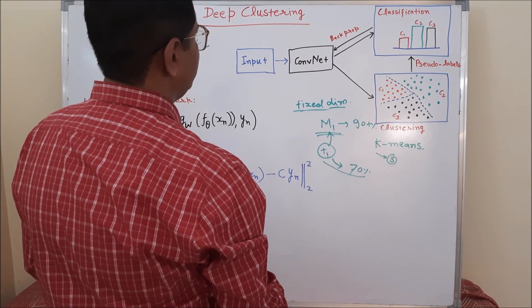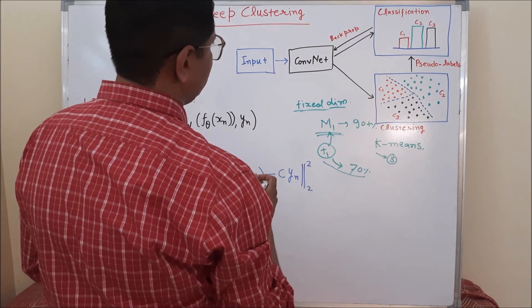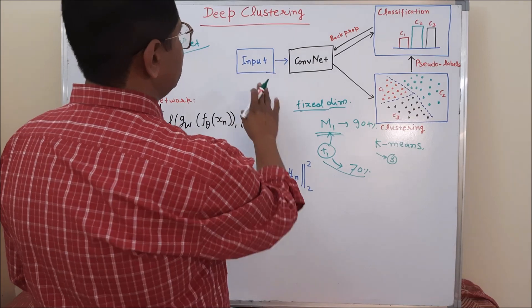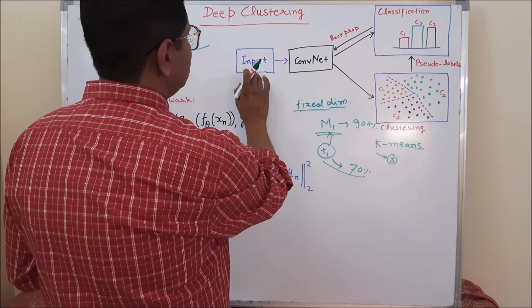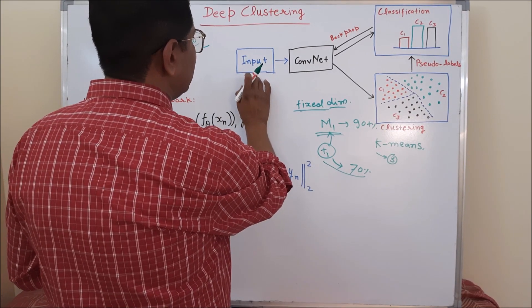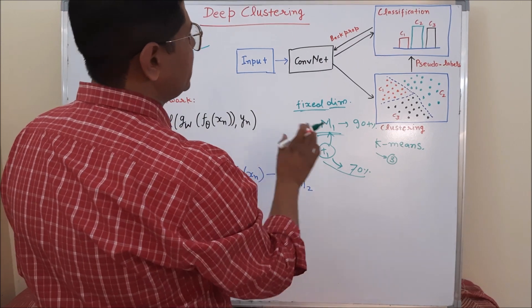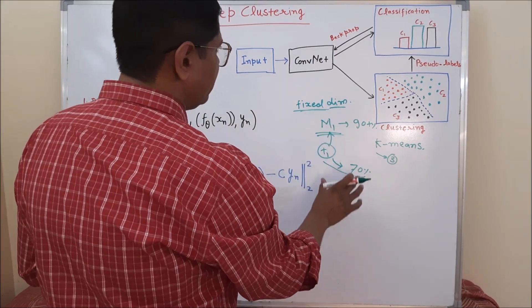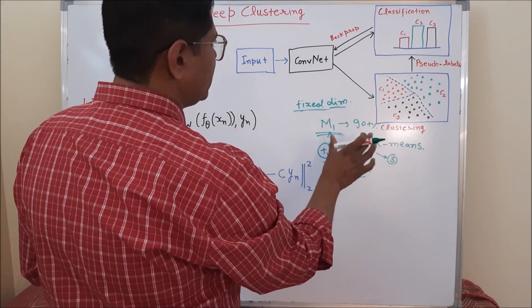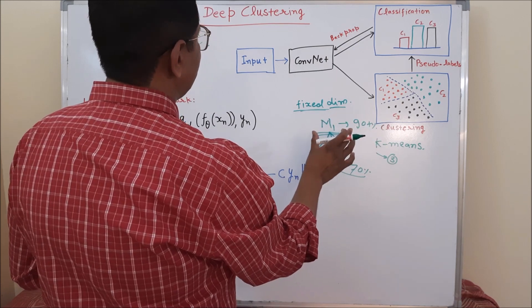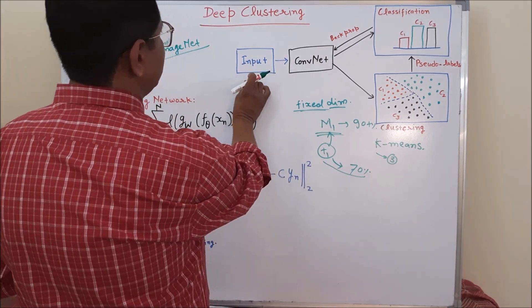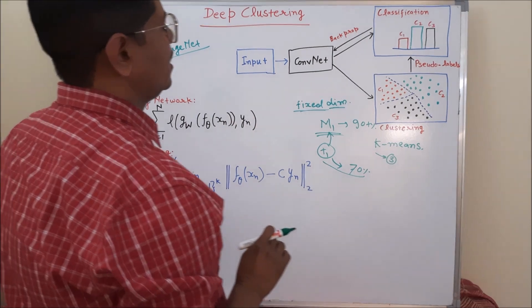This is the benefit of deep clustering or such kind of self-supervised learning. Here the things are, we did not label our input data, but still we have a classifier with near accuracy that we can achieve through labeled input data.